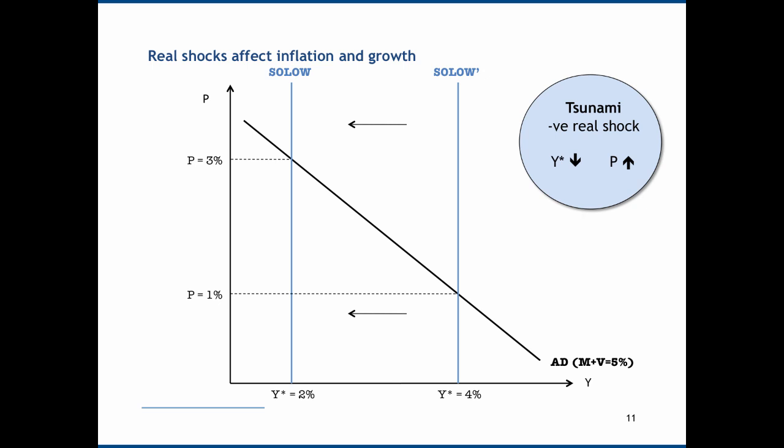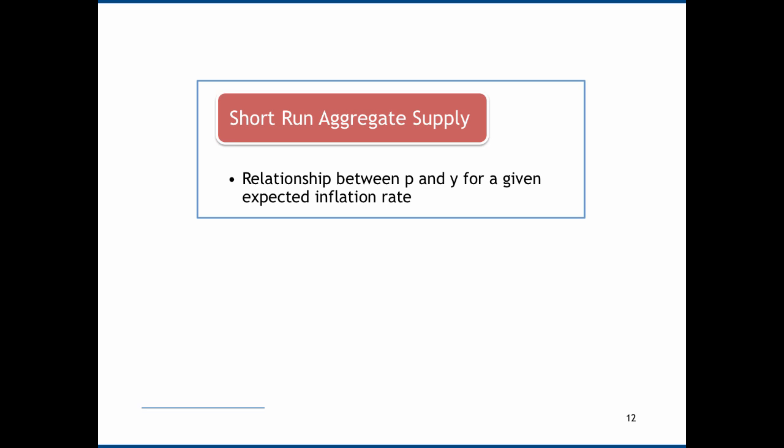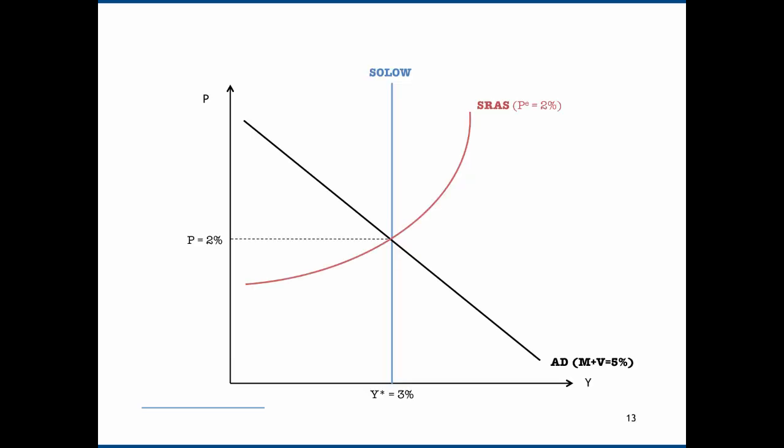This is essentially a real business cycle model, and some economists would maintain that this is really all you need to understand economic shocks and policy responses. However, this all rests on an assumption that prices are perfectly flexible, and it's worth examining whether or not this is the case in the real world. The Short Run Aggregate Supply curve is the relationship between P and Y for a given expected inflation rate, and it looks at the fact that in the short run, whilst prices adjust, there may be a positive relationship between inflation and output.